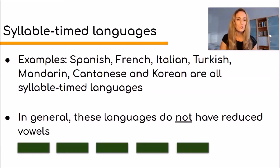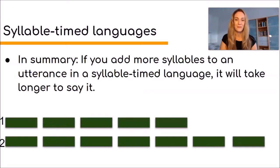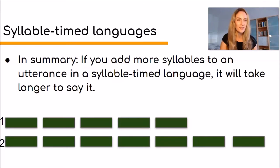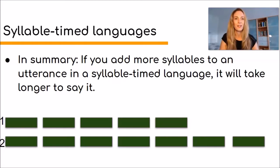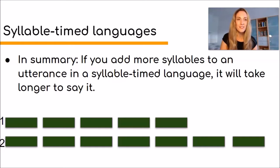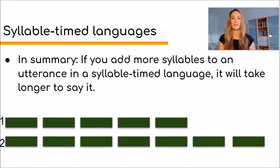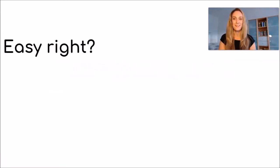Remember, these languages do not have reduced vowels in general. In summary, if you add more syllables to an utterance in a syllable-timed language, it will simply take longer to say. The first utterance has five syllables and the second has seven — so the second utterance will of course take longer to say in a syllable-timed language. That is very different to stress-timed languages, which we will look at next.